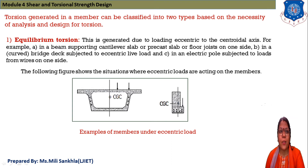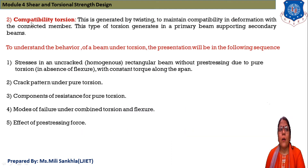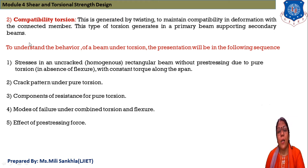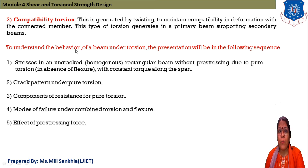The second type is compatibility torsion, which is generated by twisting to maintain compatibility in deformation with connected members. This type of torsion is generated in a primary beam supporting a secondary beam. So compatibility torsion is generated in the primary beam supporting the secondary beam.